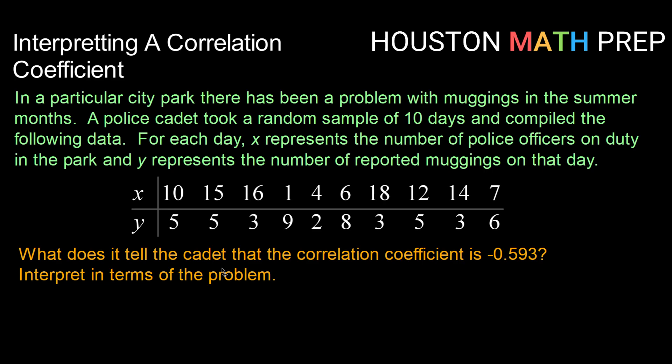So here's our setup. In a particular city park, there has been a problem with muggings in the summer months. A police cadet took a random sample of 10 days and compiled the following data. For each day, x is representing the number of police officers on duty in the park, and y represents the number of reported muggings on that day.